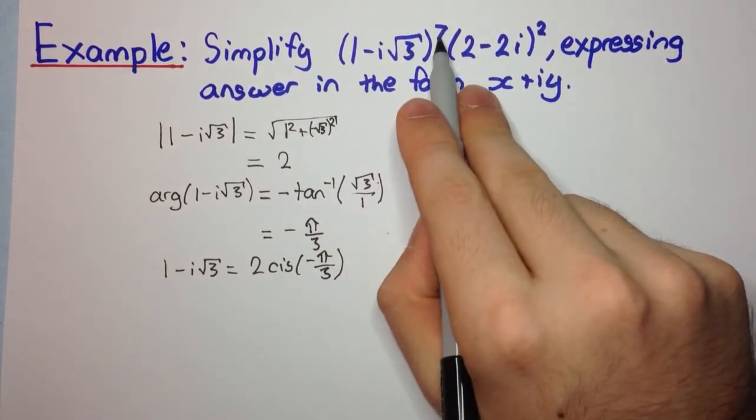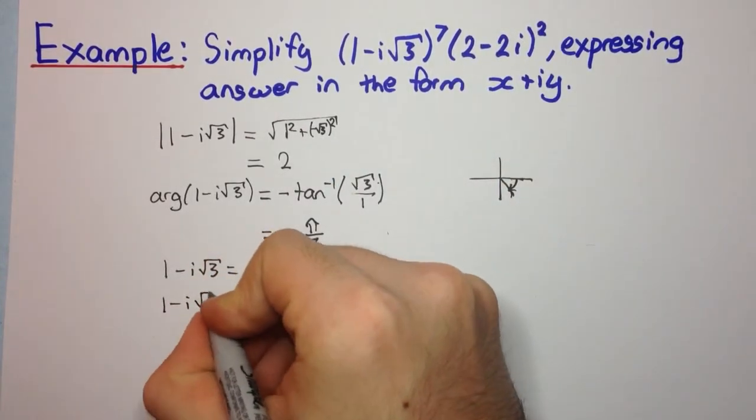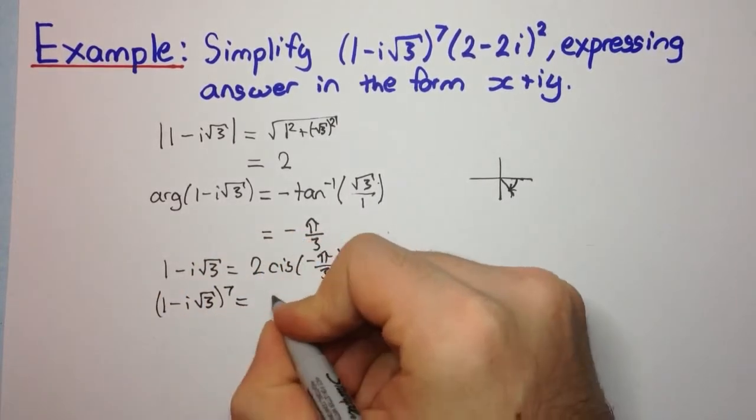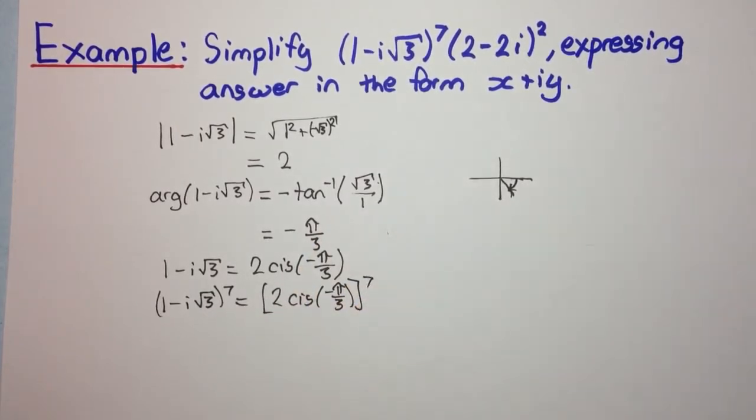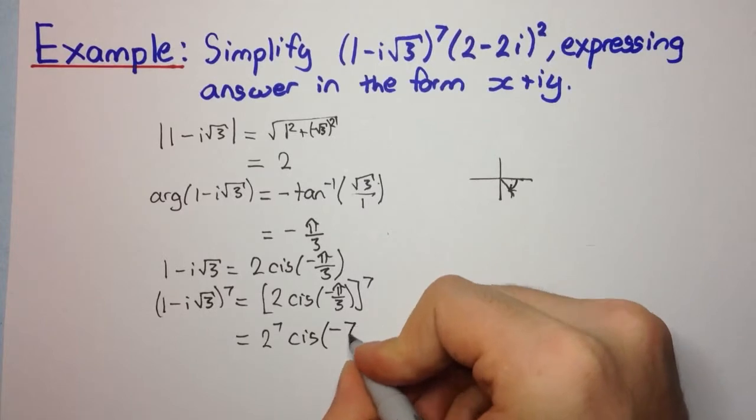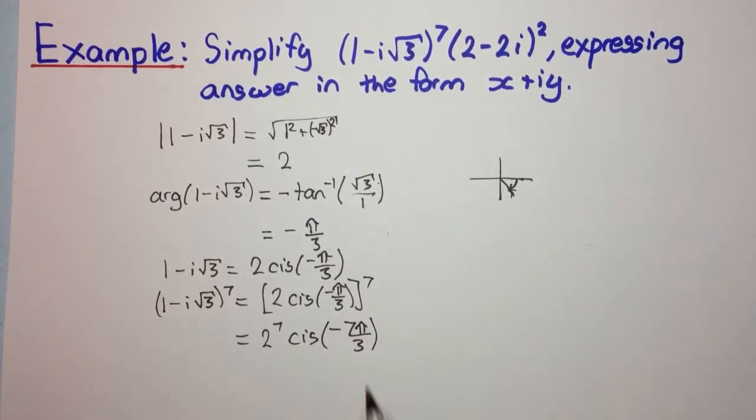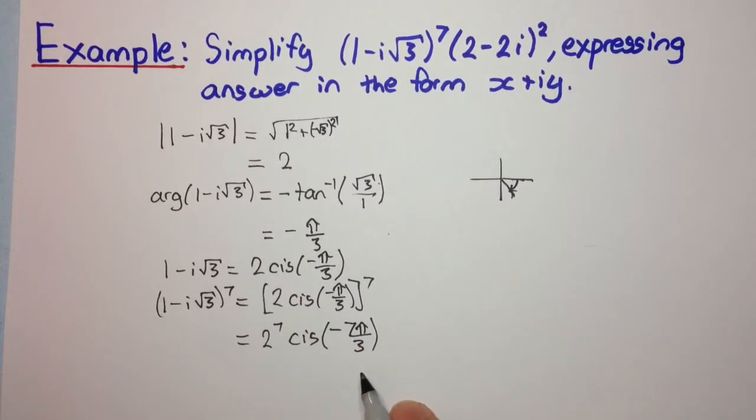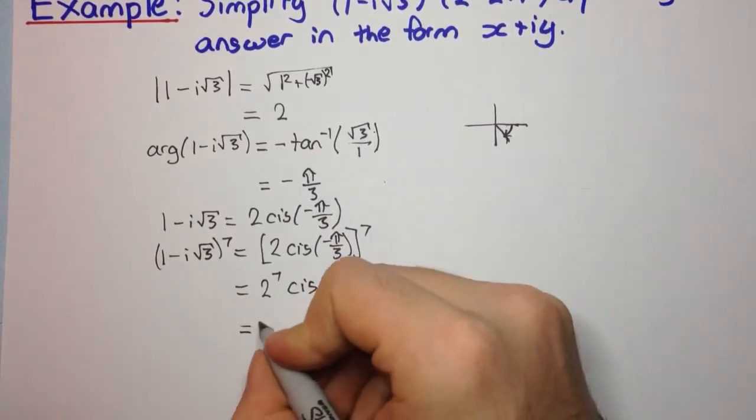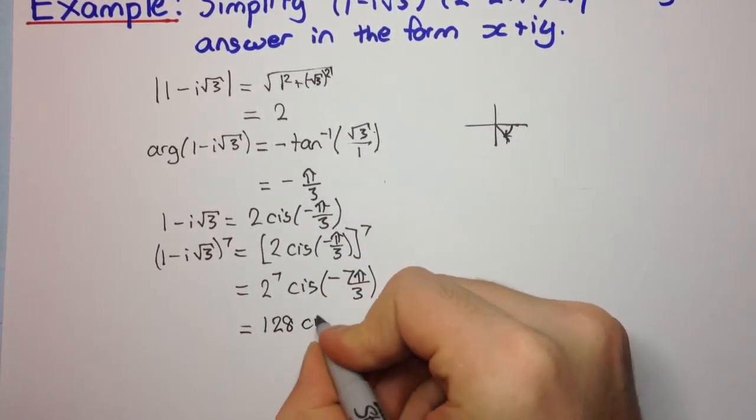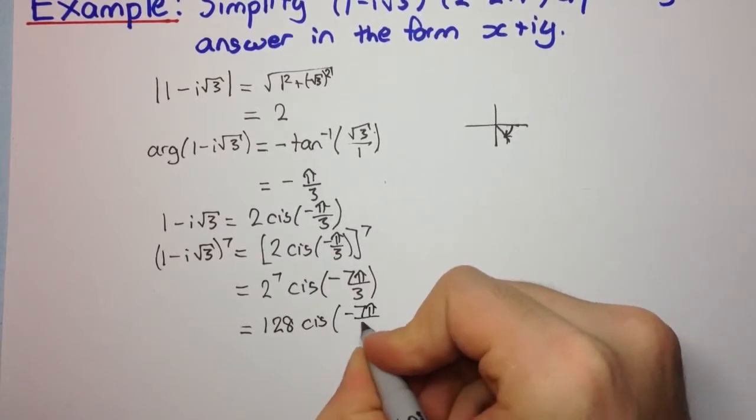Now let's compute it to the power 7. So if we're to use De Moivre's theorem now, let's just write this step here, all to the power 7. So the modulus will be raised to the power 7, obviously. But now, this comes down and is multiplied by the argument. So we're going to have -7π/3. This step here is De Moivre's theorem. And if we work out 2 to the power 7, I believe that's 128.